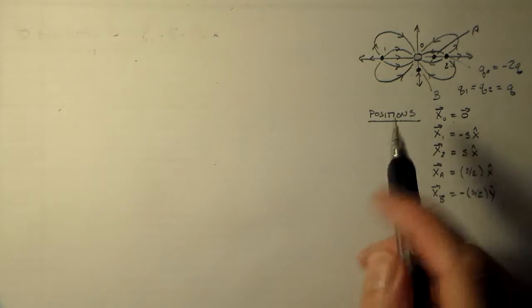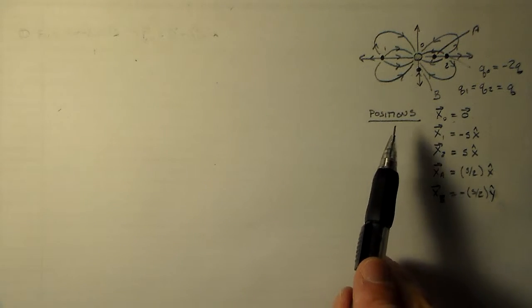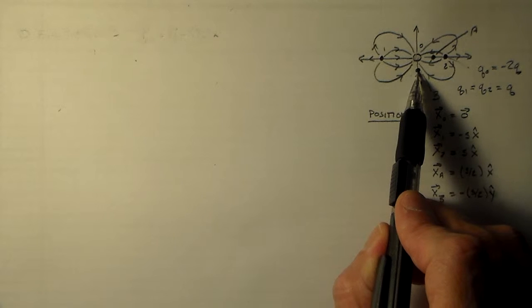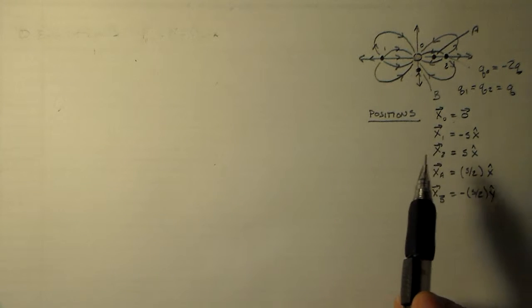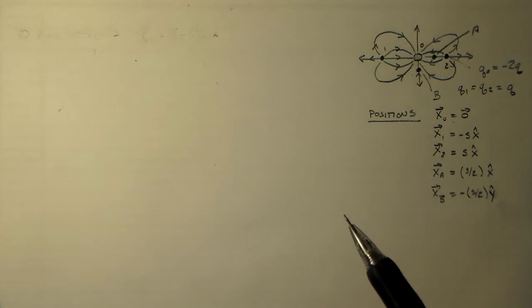Now, after having drawn this, what we'd like to do is find the field at this point and this point. We'll have to do that separately. And we have to follow a few steps - basically three steps, right?